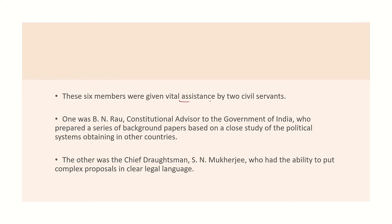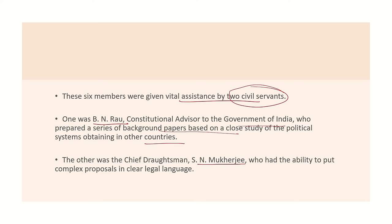Six members were given vital assistance by two civil servants. The first was B.N. Rao, who served as Constitutional Advisor to the Government of India. He researched constitutions of other countries and provided inputs. The second was the Chief Draftsman, S.N. Mukherjee, whose ability to translate complex proposals into clear legal language was invaluable.